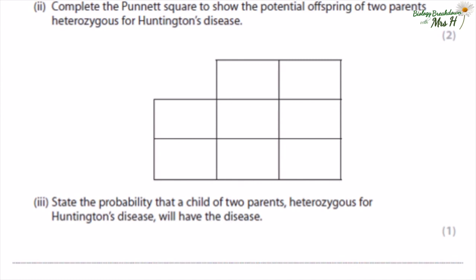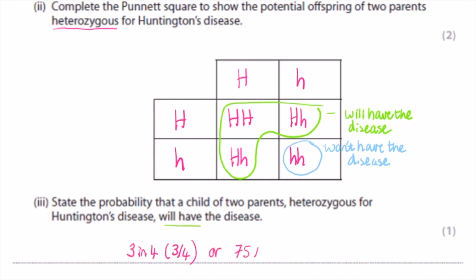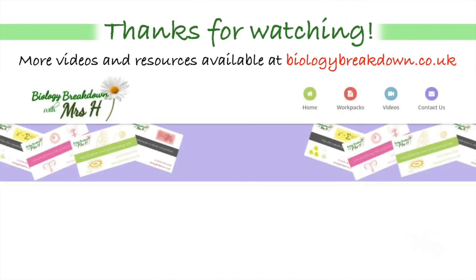Complete the Punnett square to show the potential offspring of two parents heterozygous for Huntington's disease. Put the parent gametes H and h into the square, then complete the cross — remember capital letters come first with heterozygotes. State the probability that a child of two heterozygous parents will have the disease. One in four won't have the disease but three in four will, so each time these parents have a child there is a 75% chance — the same as three in four — that the child will have Huntington's.